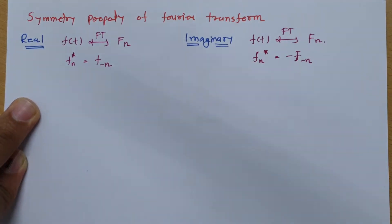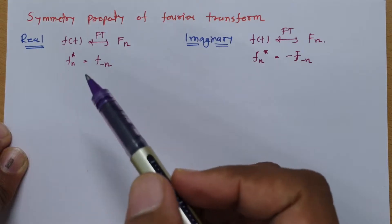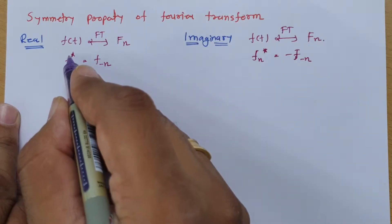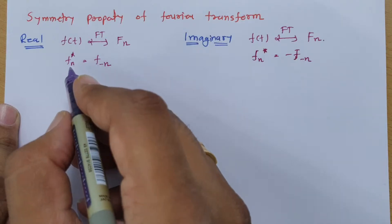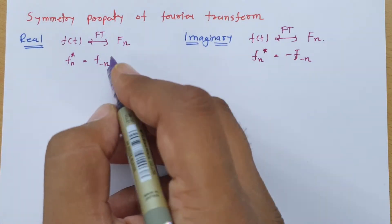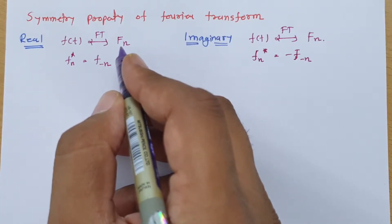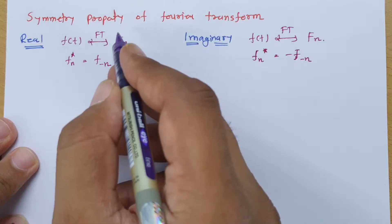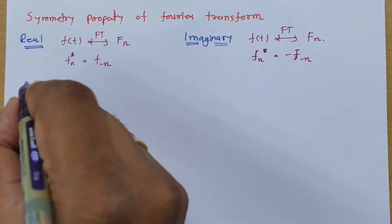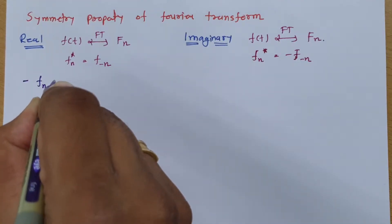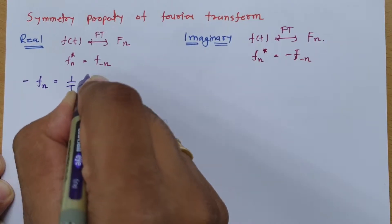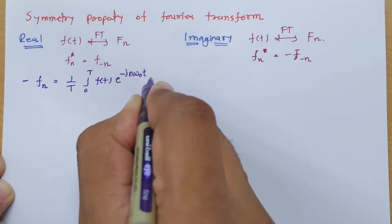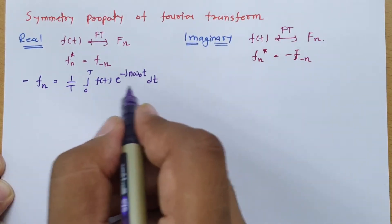I'll now derive this relation step by step. First, recall what F(n) is — it is the Fourier series coefficient. The formula is: F(n) = (1/T) × integral from 0 to T of f(t) × e^(−jnω₀t) dt. This is how we calculate the value of the coefficient.